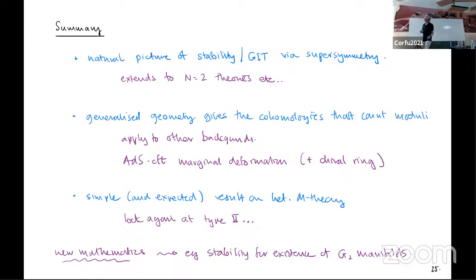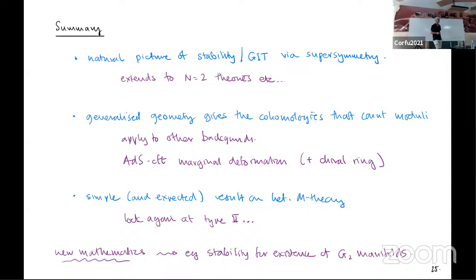I should stop. I hope I've given you that there's a natural picture of stability, GIT, and supersymmetry. You can extend all this to other theories as well. Generalized geometry gives a nice way of calculating these cohomologies that would be very hard to do without the structure of exceptional generalized geometry. It's indicating some new mathematics, particularly ideas about stability of G2 manifolds. Thank you.